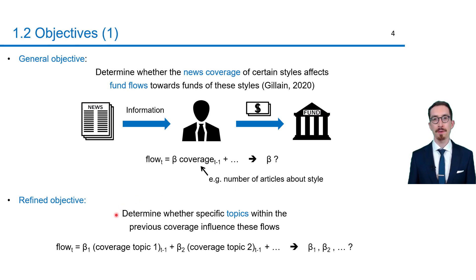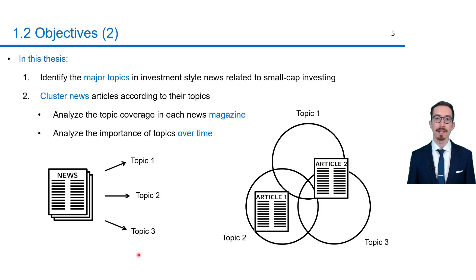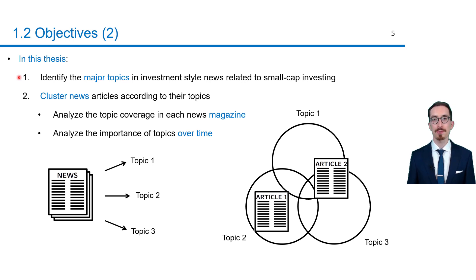This general objective can further be refined by wondering whether specific topics within the previous news coverage influenced these fund flows. Quantitatively, this objective consists in identifying the values of these topical betas by a regression analysis. This regression requires determining the news coverage of the different topics. This finally leads to the objectives of this thesis: the first objective is to identify the major topics in investment style news related to small cap investing, and the second objective is to cluster the news articles according to their topic.